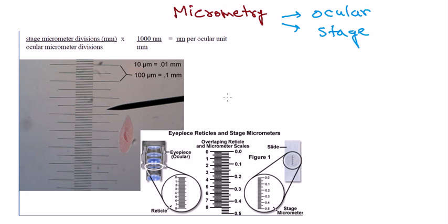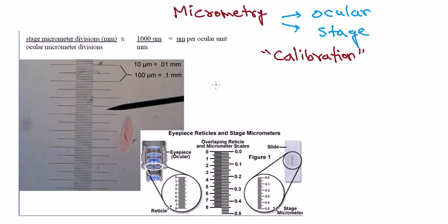We can get the length, breadth, or any measurement we want for our object. Calibration is a very important step. Once we calibrate our microscope we can easily calculate everything. The first important thing is to put the ocular eyepiece division into the eyepiece, then place the stage micrometer where we normally put the slide with our sample, and then calibrate. The formula for calibration is: stage micrometer division in millimeters divided by the ocular micrometer division, multiplied by 1000 micrometers per millimeter, giving us units of micrometers per ocular unit.